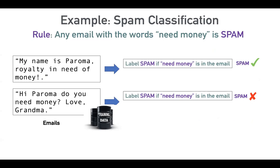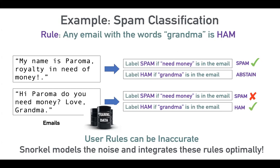So instead of having a rule in my head that if someone's asking for money in an email it's probably spam, I can convert it into a heuristic. I can say: whenever an email contains the words 'need money' or is asking for money, then it's a spam email. And I can apply it to all the emails I have access to.